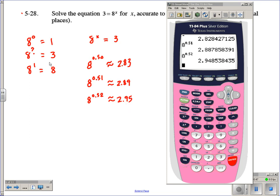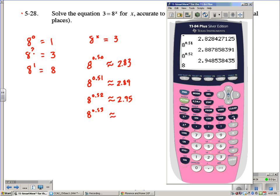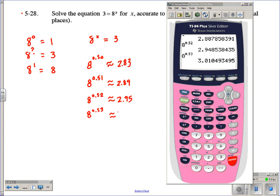So we're getting pretty close. Remember, we're trying to get to 3, so you can climb your way up like we're doing right now. That's not a problem. Let's say 8 to the power of 0.53. Let's see what that's going to be. Now we're at 3.01. So that's pretty close.